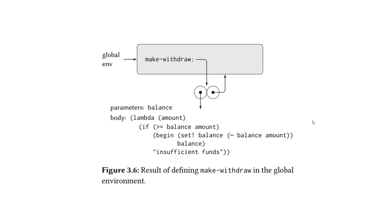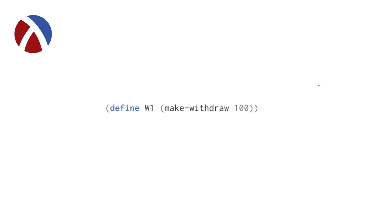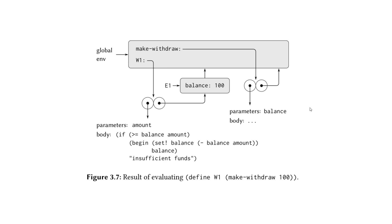Figure 3.6 shows what this environment looks like. In the global environment we have a procedure make-withdraw. Different from what we've seen before, the parameter is balance but the body is a lambda itself. So when we invoke this it's going to do something slightly different. The first piece of our procedure points to the parameters and body, and the second piece points to the enclosing environment.